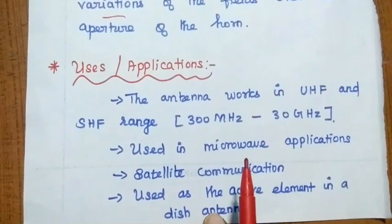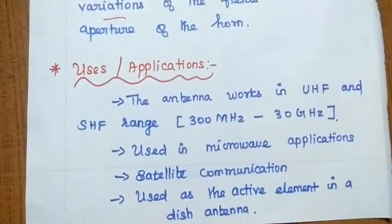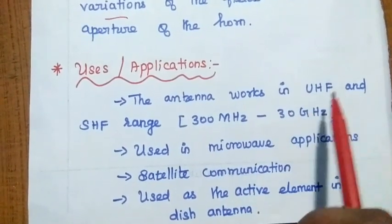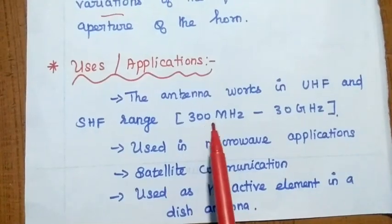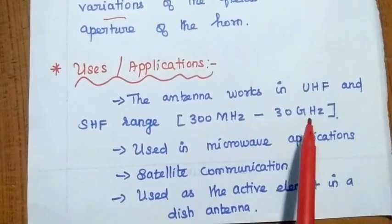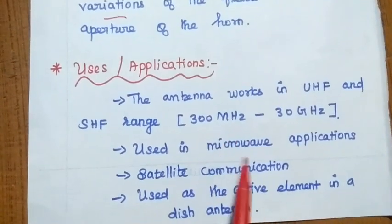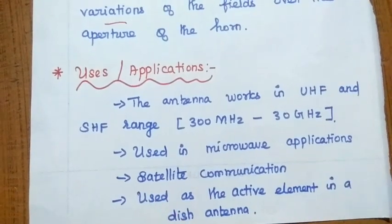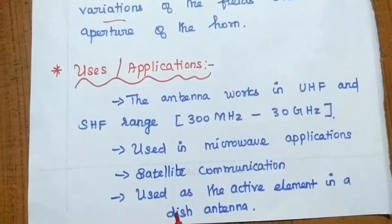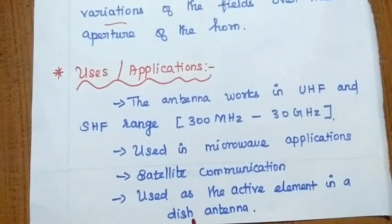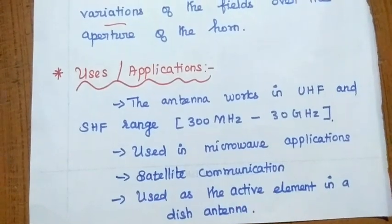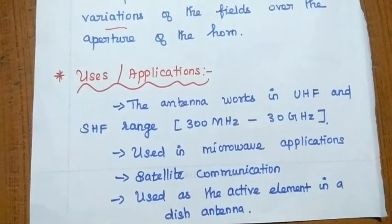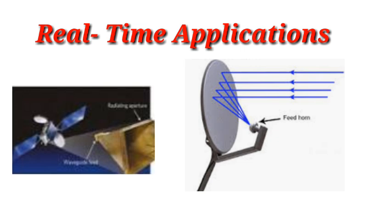Finally, the uses and applications of horn antenna: the horn antenna works in the range of ultra-high frequency and super-high frequency, that is 300 MHz to 30 GHz. It is widely used in microwave applications and satellite communication. In real-time use, the horn antenna can be seen in dish antennas, where it is used as an active element to feed the signal.